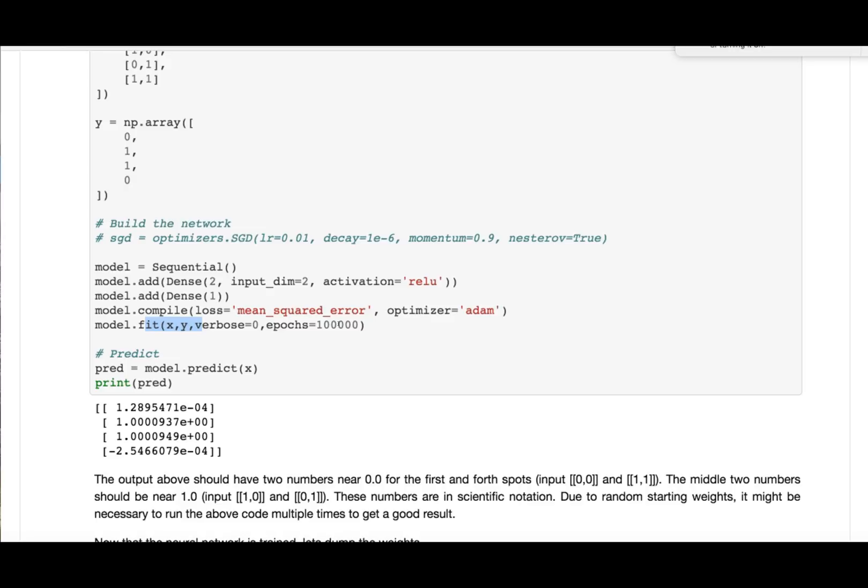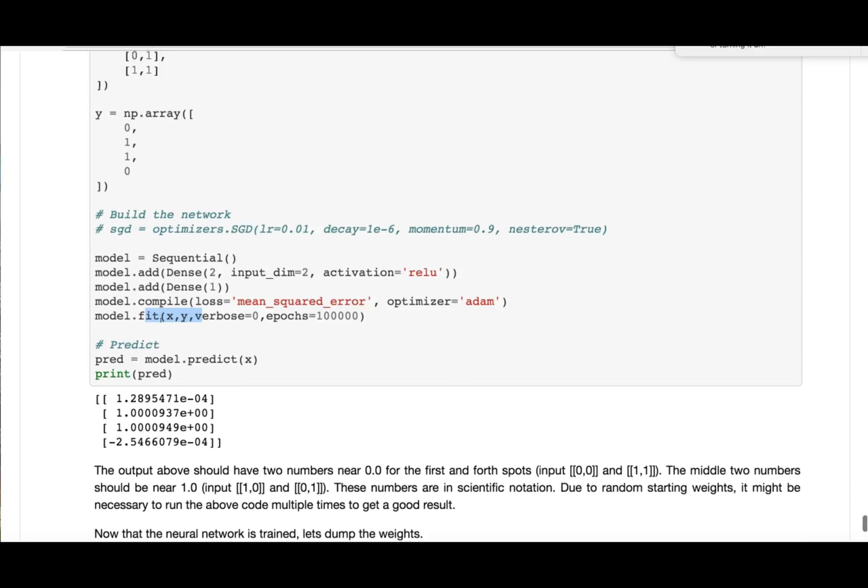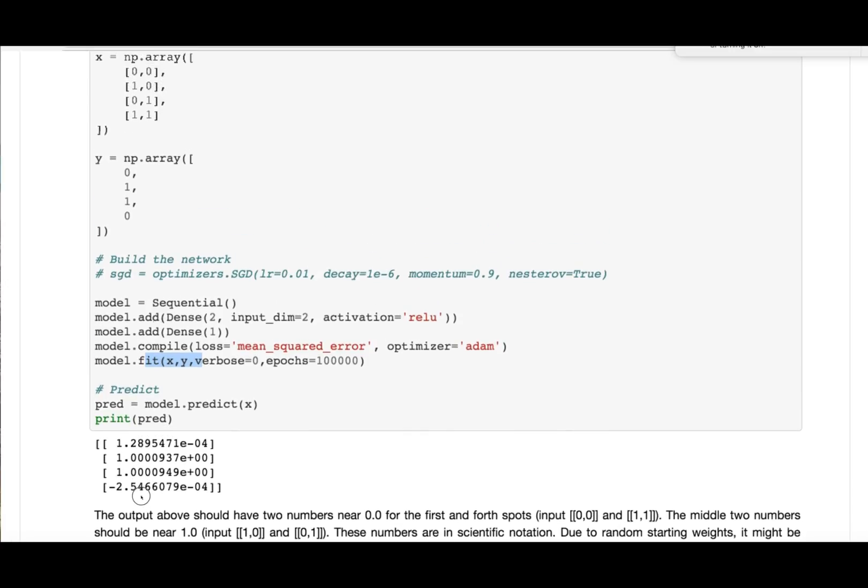I train it. I predict it. This is good for the neural network because each of these four correspond to these four up here in the input. This is scientific notation. So to the negative four, that's 0.000, that number. So these two are effectively zero and these two in the middle are effectively one. So this may look weird if you're not used to seeing numbers like this, but this is a great output. The neural network has trained quite well.